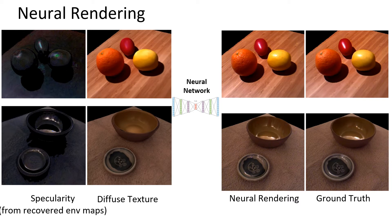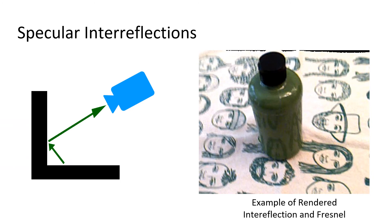The network is trained per scene using perceptual and adversarial losses. Our neural rendering approach also supports an explicit model of specular interreflection and Fresnel reflection, two phenomena that are not supported in most image-based rendering methods. The paper contains more details.